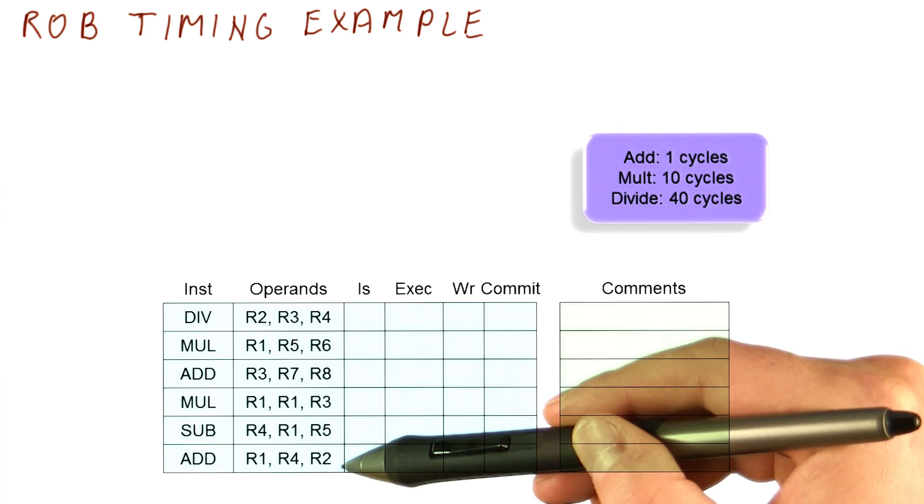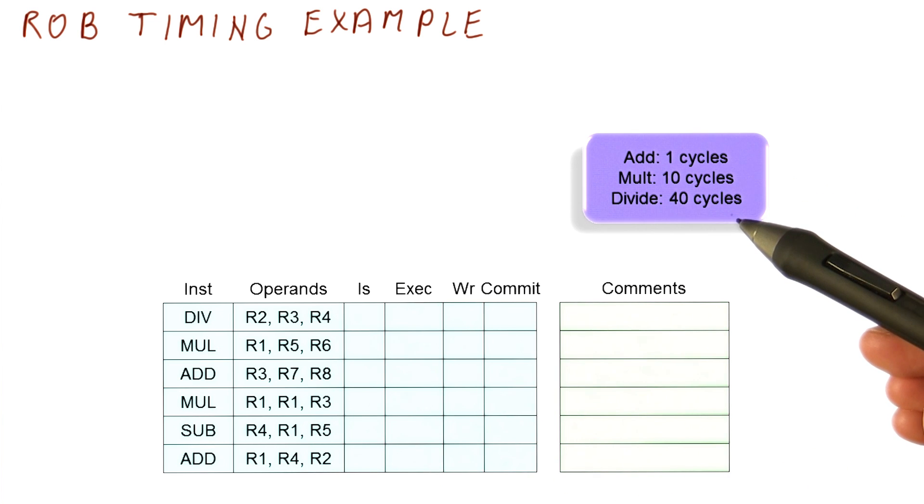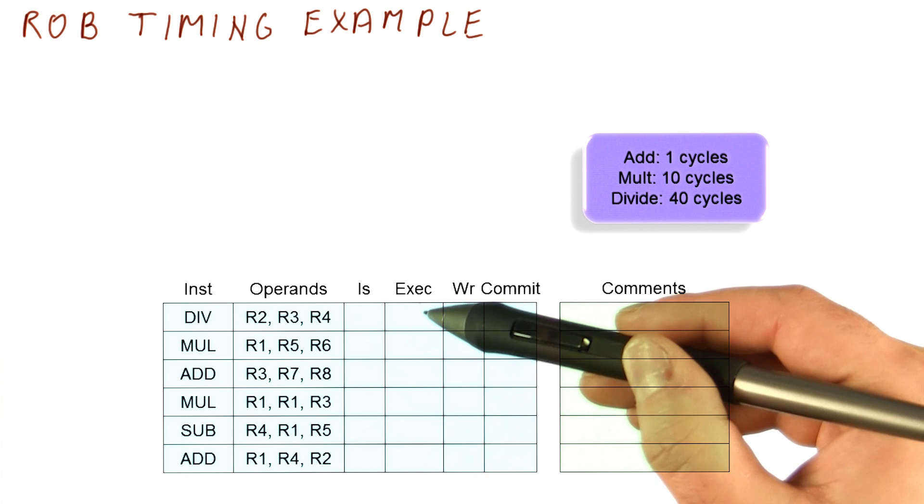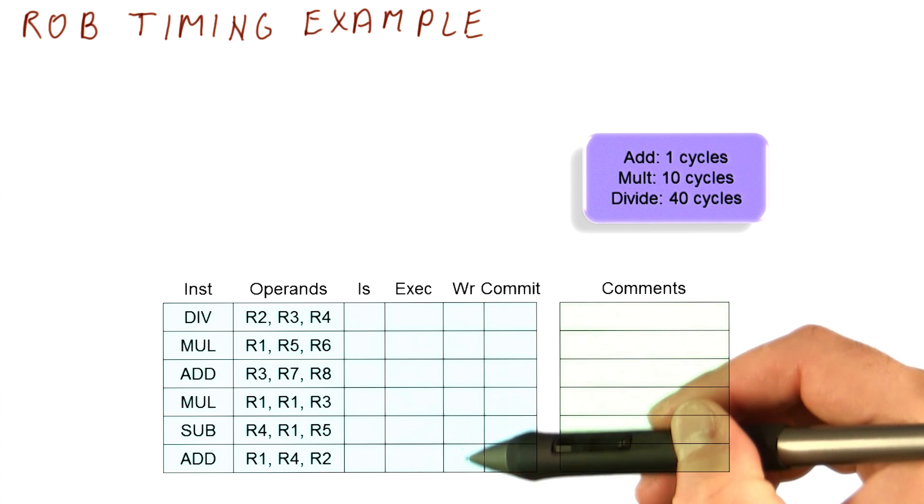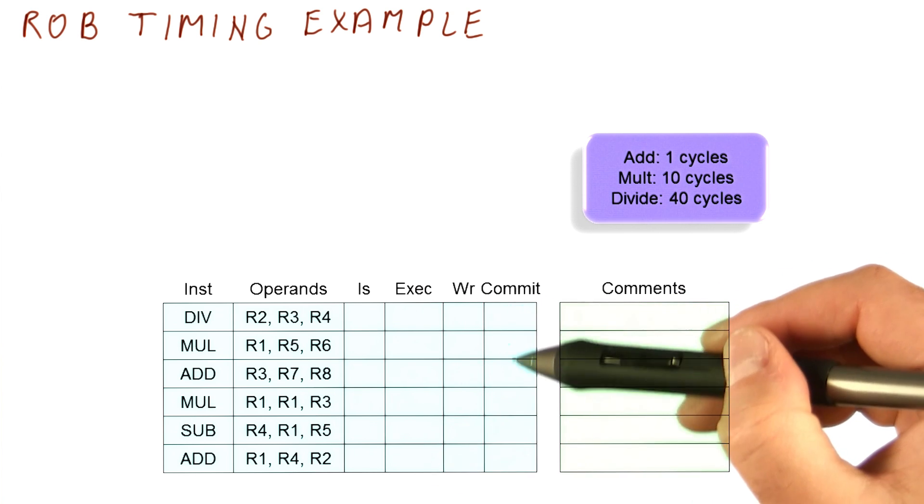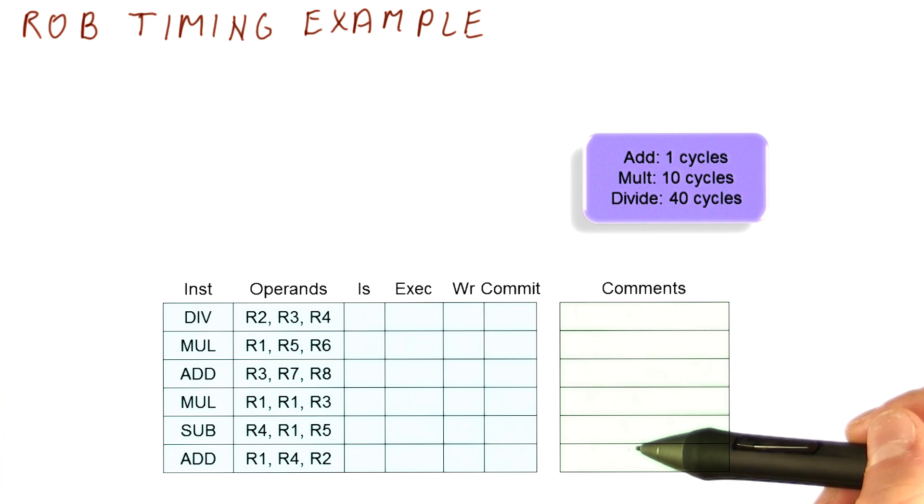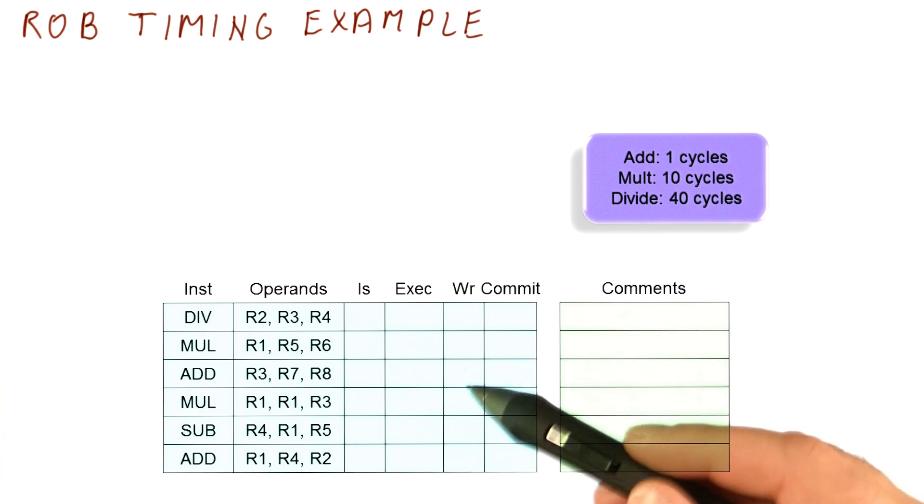Here we have some instructions. Here we have what the latencies of various units are. And now we're just going to track when instructions are issued, when they begin executing, when do they write the result, broadcast it, and when do they commit. And here we will put some comments that help us tell what happened, when, and why.